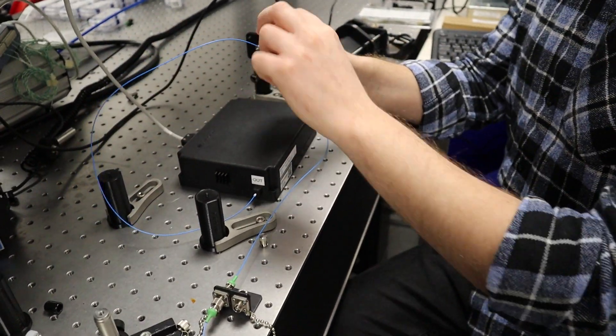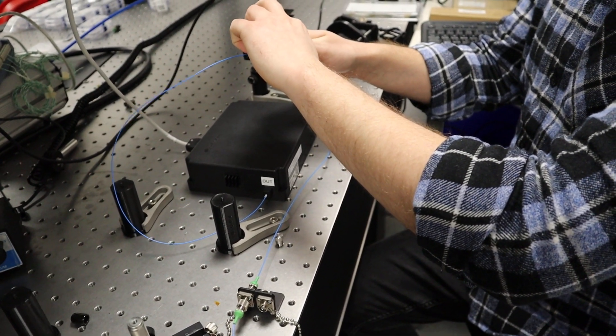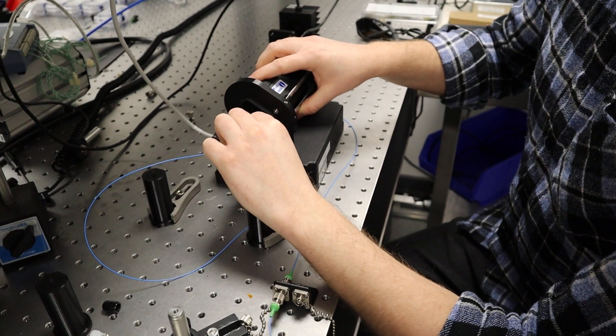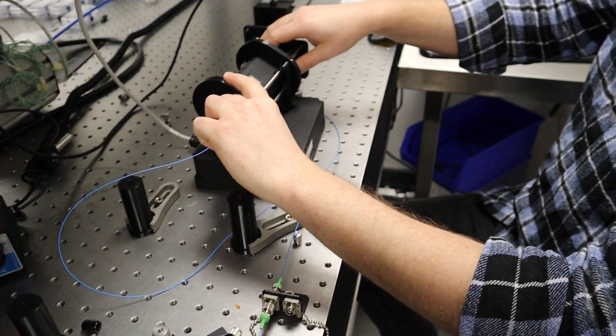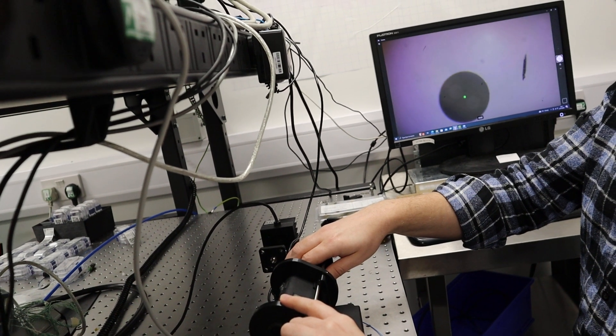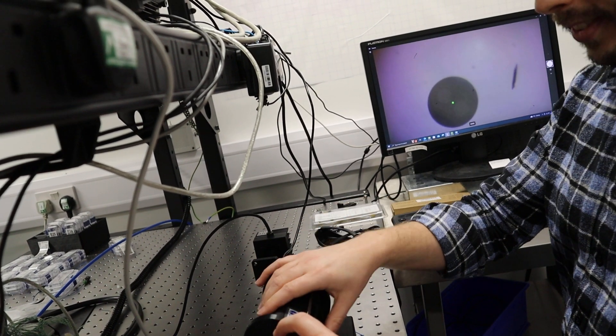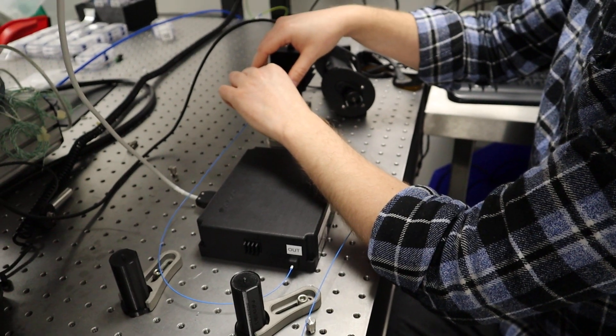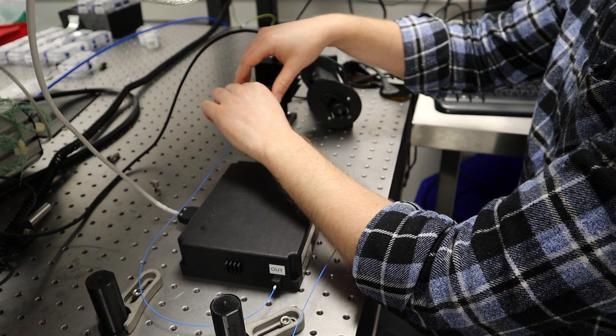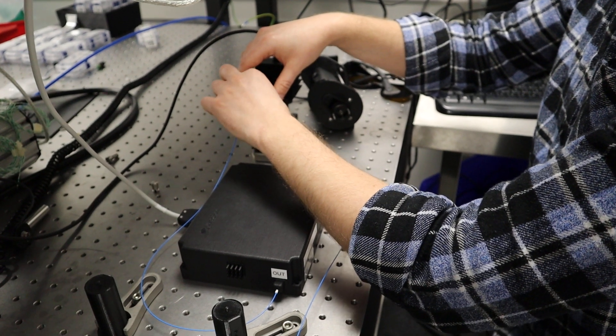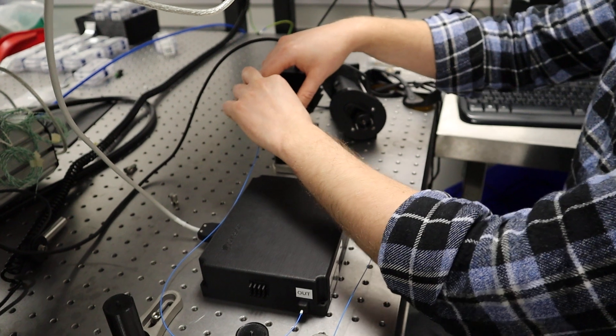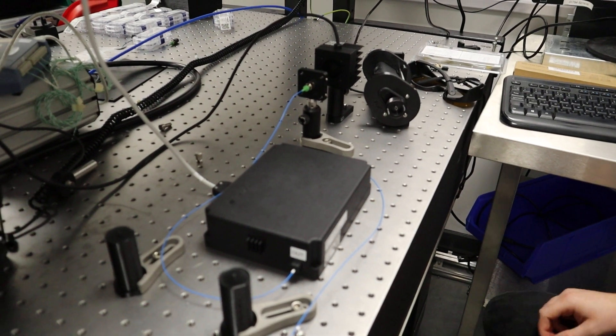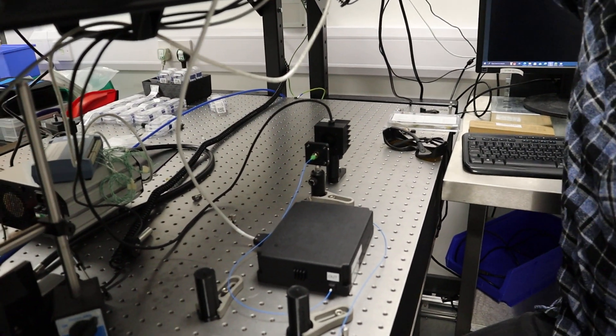And then we do the same to our output fibre. OK, that's directed into a power meter. So this module is built for 1064 pump input to generate 532 nanometers second harmonic.